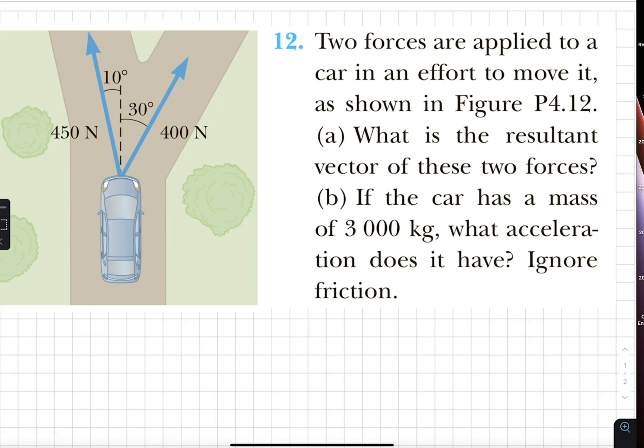Now, these two forces are not perpendicular to each other. They're not collinear. Had they been collinear, for example, if I have 450 pointing to the right and another 400 pointing to the same right, we would have just done 400 plus 450 and be done with it, 850 and we're happy.